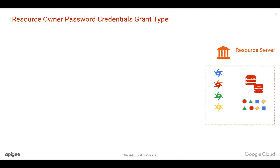Let's say you have a backend server where the user data is stored — let's call that the resource server. You have different sets of APIs exposed out of this backend server. Let's say this backend server is a big bank, and the bank has various operations like fund transfers, account statements, and account information.